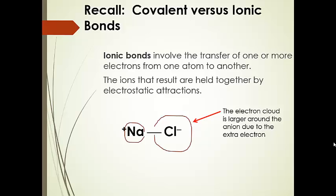What about ionic bonds? These involve the transfer of one or more electrons from one atom to another. For instance, sodium transfers one electron and gives it to the chlorine atom, so now we have a chloride anion — negatively charged — and a positively charged sodium cation. Electrostatic attractions hold these two ions together. Also notice that the electron cloud is larger around the anion due to the extra electron.